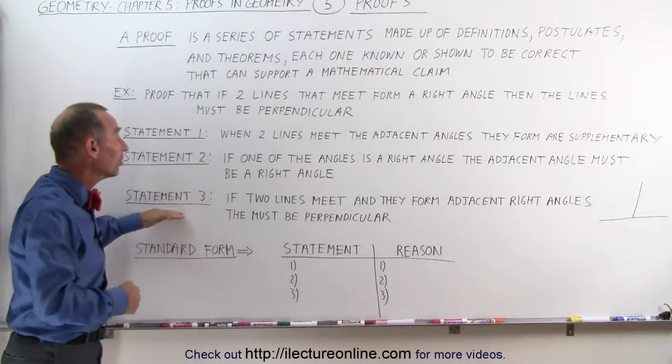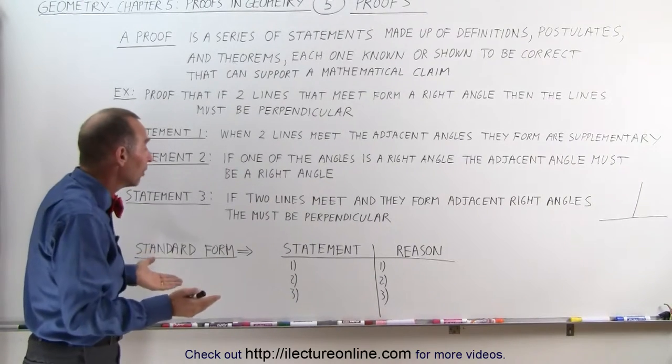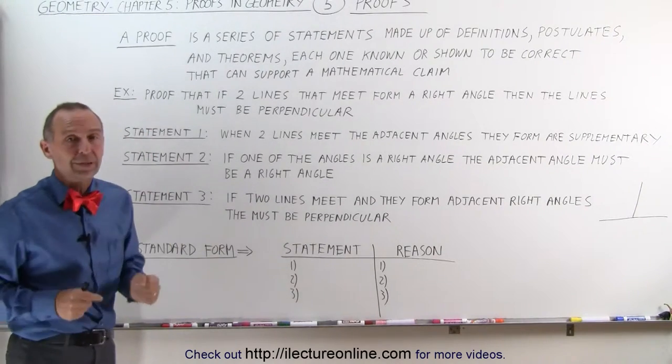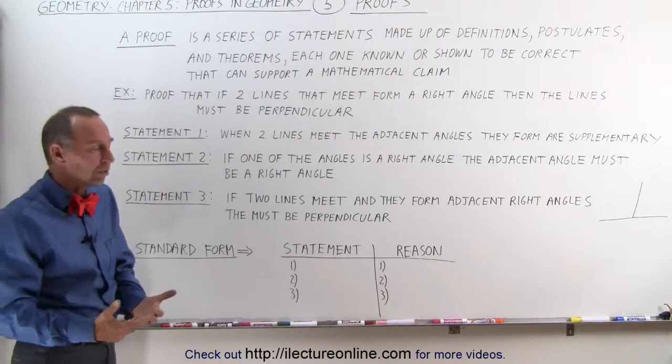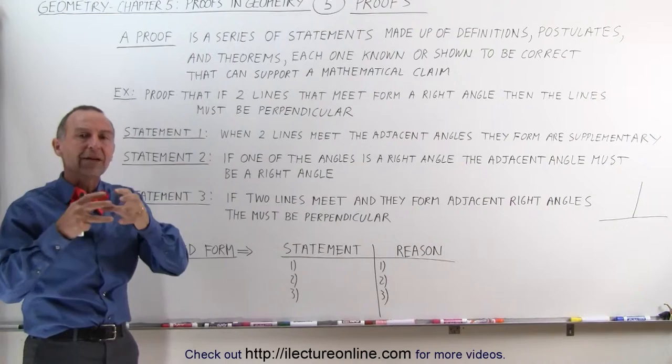And then, the third statement comes in and says, well, if the two lines meet, and they form adjacent right angles, then those lines must be perpendicular. Another postulate. So, together, you can put those statements together and form a proof.